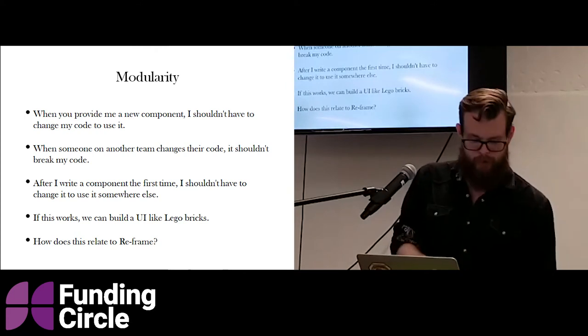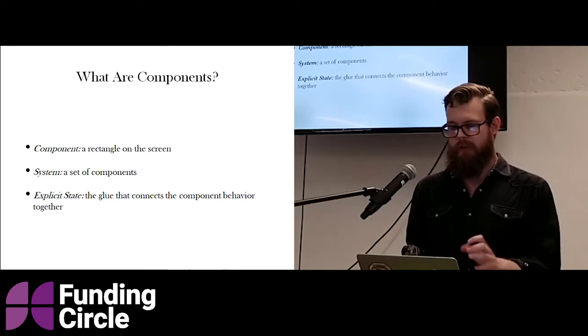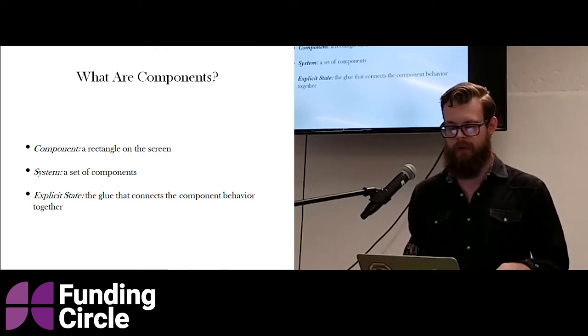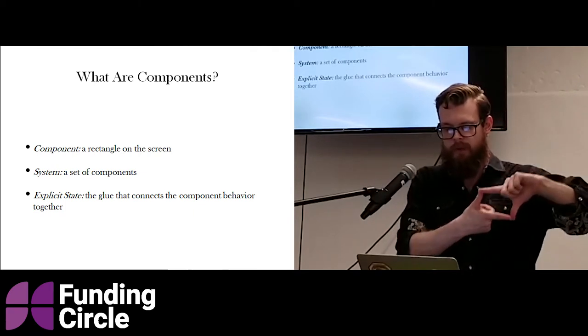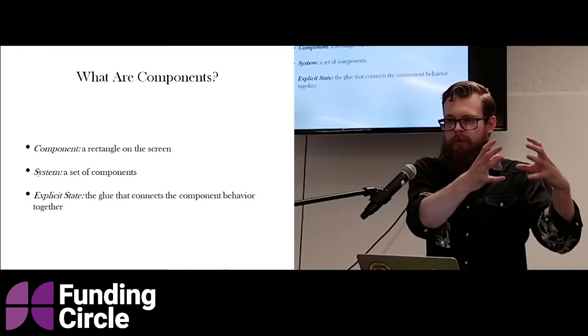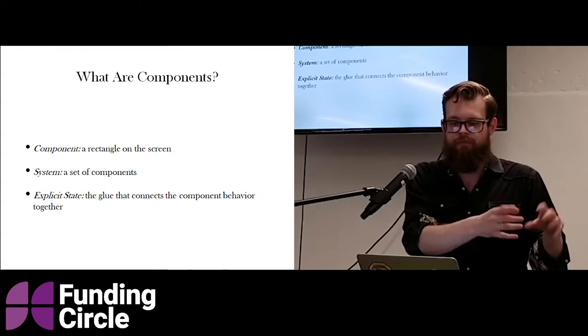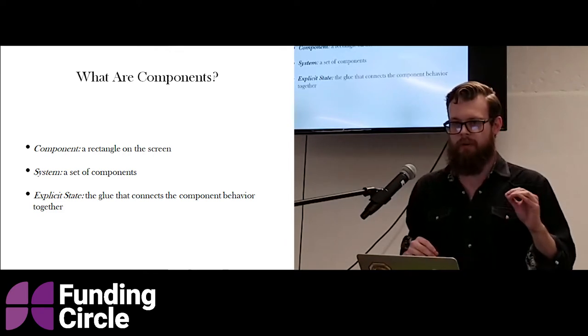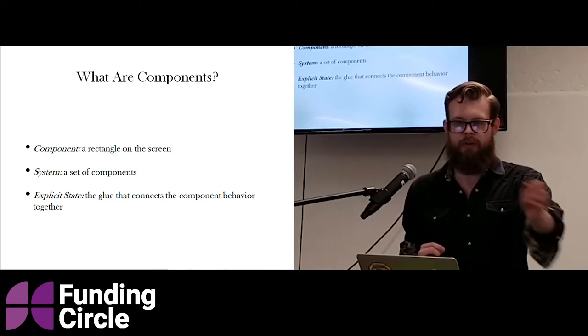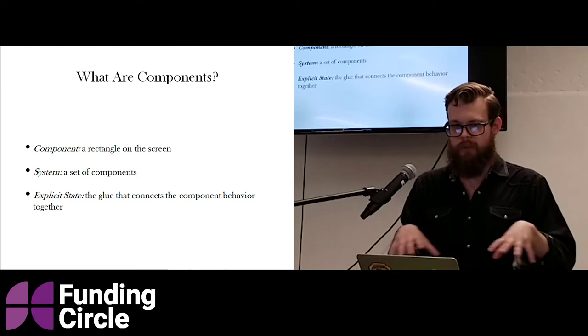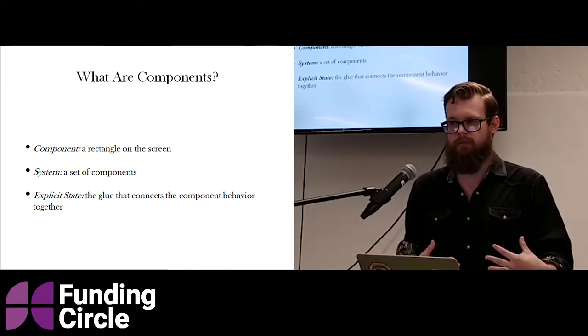So, how do we get to that Lego brick model for Reframe? Before we dive into the specifics, I wanted to give a brief overview of the overall model and how the components fit into the big picture. Very quickly, a component is a rectangle on the screen, a piece of your monitor, and a system is just a bunch of components together. And then explicit state is how the components talk to each other. An explicit state is really where we get stuck, because it's only once you start having them talk to each other that you break modularity.